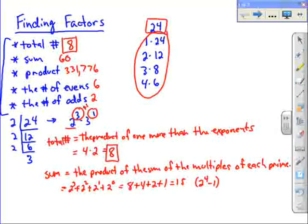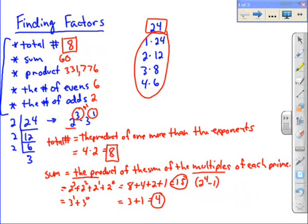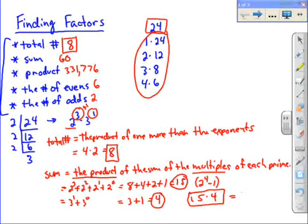Unfortunately for 3, the shortcut isn't as easy, so you just have to add them up. 3 to the first plus 3 to the zero equals 3 plus 1, which equals 4. So the sum of the multiples of 2 is 15. The sum of the multiples of 3 is 4. And it tells me to find the actual sum of all the factors, you multiply those together. 15 times 4, that equals 60, which is exactly what we got up here. So that is the shortcut or the formula for finding the sum of the factors of a number.